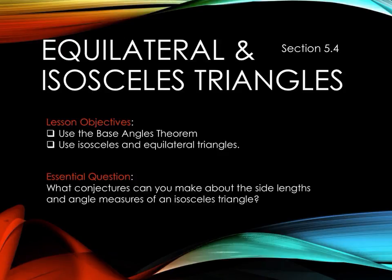Good evening, mathematicians. Here's section 5.4 on equilateral and isosceles triangles. Our objectives are to use the Base Angles Theorem and use our isosceles and equilateral triangles. Hopefully we can answer the question: what conjectures can you make about the side lengths and angle measures of an isosceles triangle?